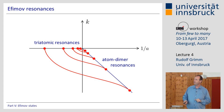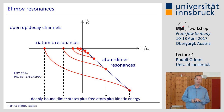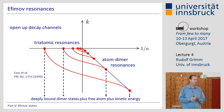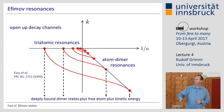Efimov states also feature resonance points: where trimer states hit the threshold we get triatomic resonances, and where they merge with the atom-dimer threshold we get atom-dimer resonances. What happens there is that decay channels open up. Colliding particles form an Efimov state temporarily, which opens up decay channels to more deeply bound states, causing loss. These triatomic resonances lead to resonant loss features in atomic quantum gases — this is the observable in experiments. On the atom-dimer side, we can observe decay as well, and these resonances are the most striking features.